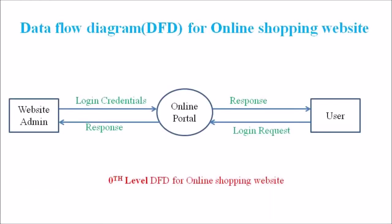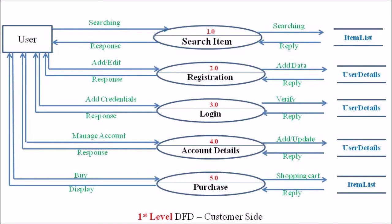In the last lectures, we discussed the zeroth level and first level DFD for the customer side online website portal. In the customer side Level 1 DFD, we can see five independent processes: search item, registration, login, account detail, and purchase.